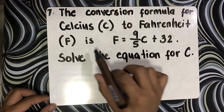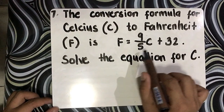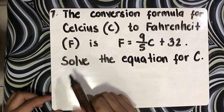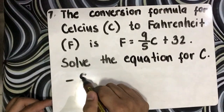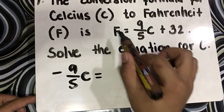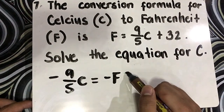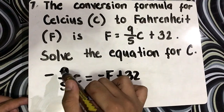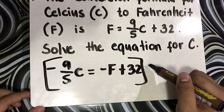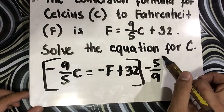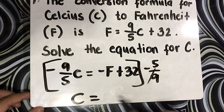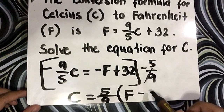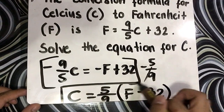The conversion formula for Celsius to Fahrenheit is F equals 9 over 5 times C plus 32. Solve the equation for C. First step, transpose: negative 9 over 5 times C equals negative F plus 32. To remove negative 9 over 5, multiply both sides by negative 5 over 9. This cancels out, so C equals negative 5 over 9 times quantity F minus 32.